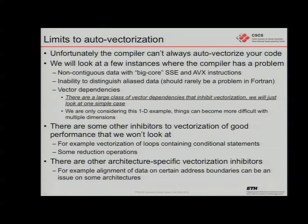So, auto-vectorizing compilers. So far we've seen that we can get some speedup and get the compiler to tell us what it's been doing, but there are some limits to auto-vectorization. You've seen certain loops with dependencies and so on. We're going to look at a few instances where the compiler has a problem — some of you have already seen some of these by just playing around with the little codes yourself.